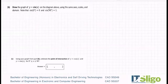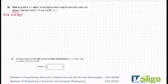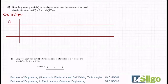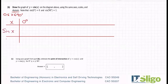Draw the graph of y is equal to sine x on the diagram above using the same axis scales and domain. Note that sine 0 degrees is equal to 0 and sine 90 is equal to 1. The same domain is 0 degrees to 90 degrees, and that tells you what your start and stop is on your function. So I'm going to start my x values at 0 degrees and end at 90, and I'll have sine x as my output.